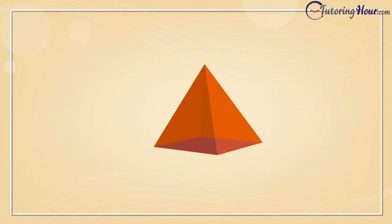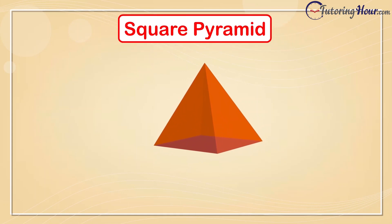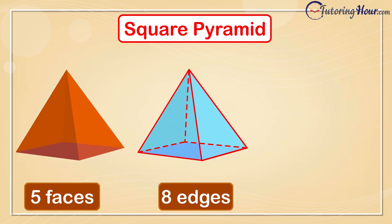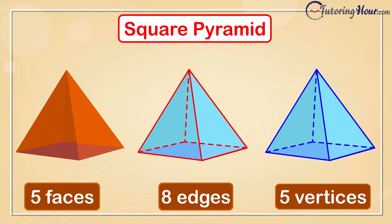Our next pyramid has a square base. No points for guessing its name. It is a square pyramid. A square pyramid has 5 faces. It has a square base and 4 triangular side faces. A square pyramid has 8 edges. It has 5 vertices.